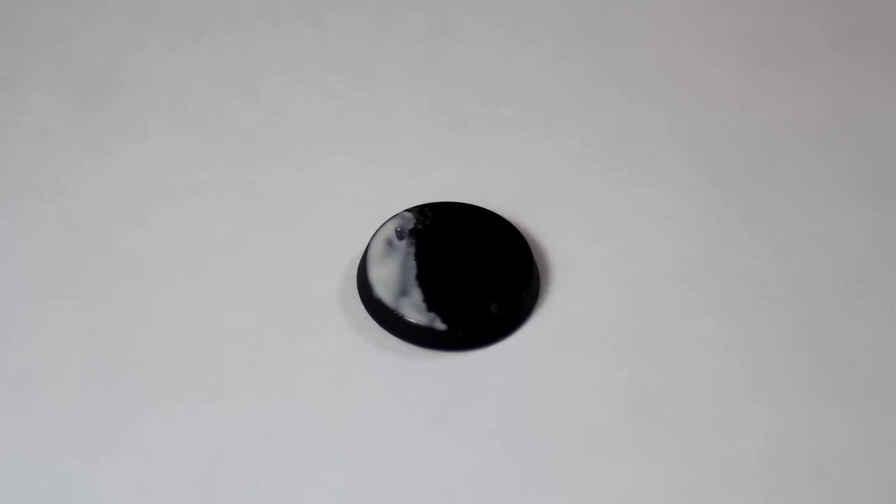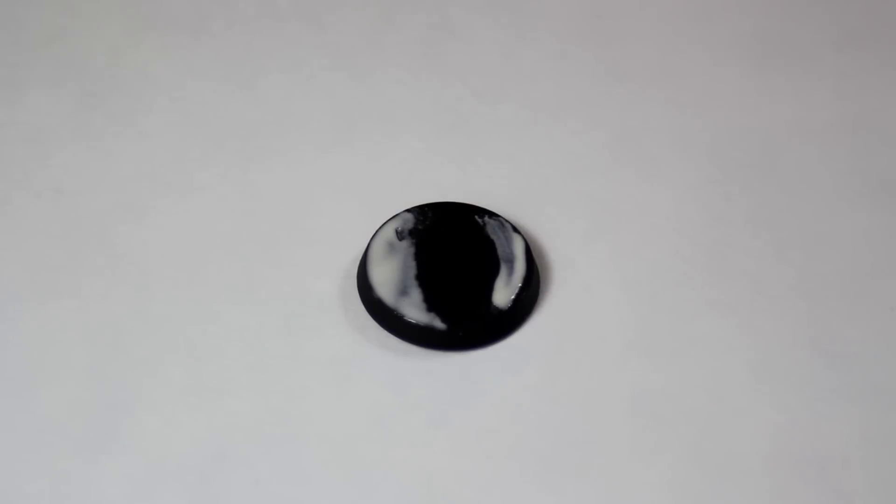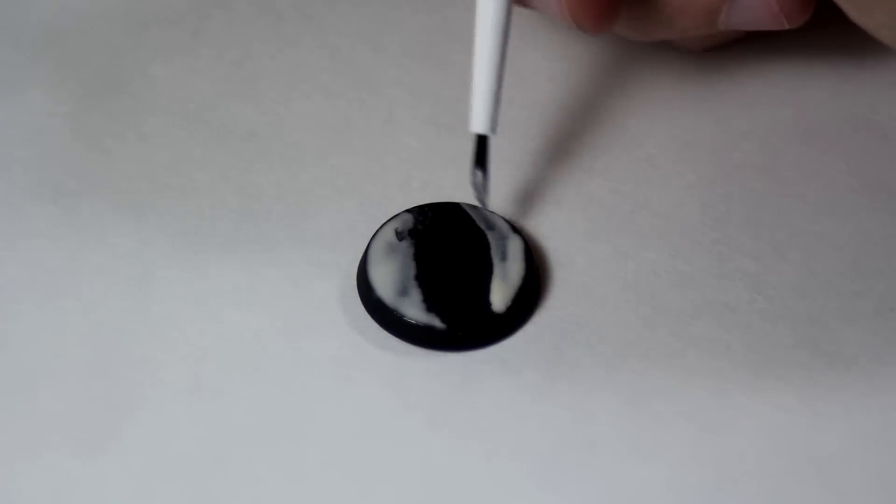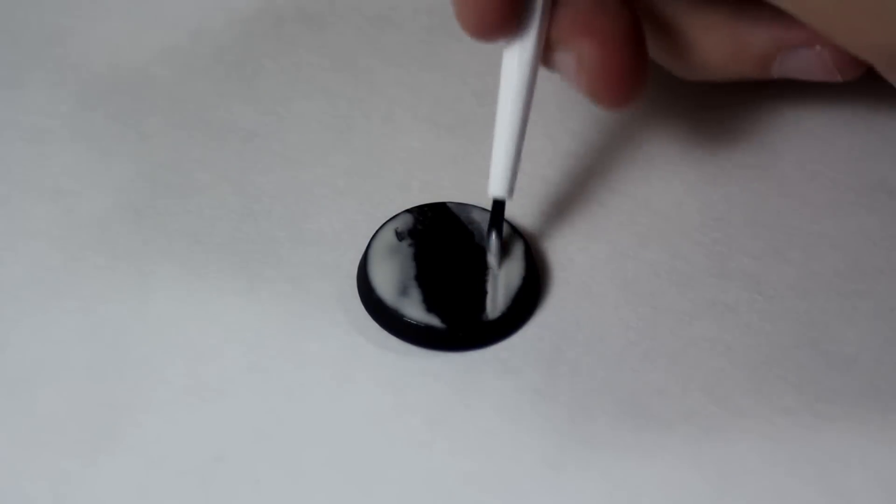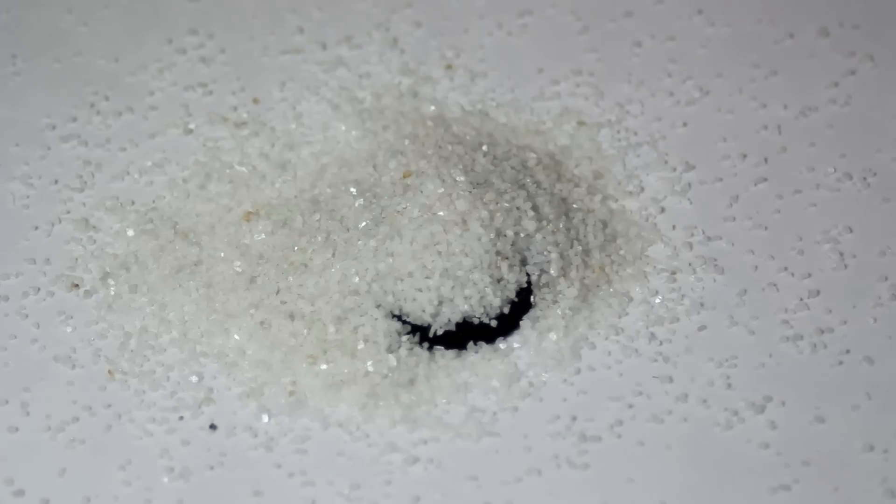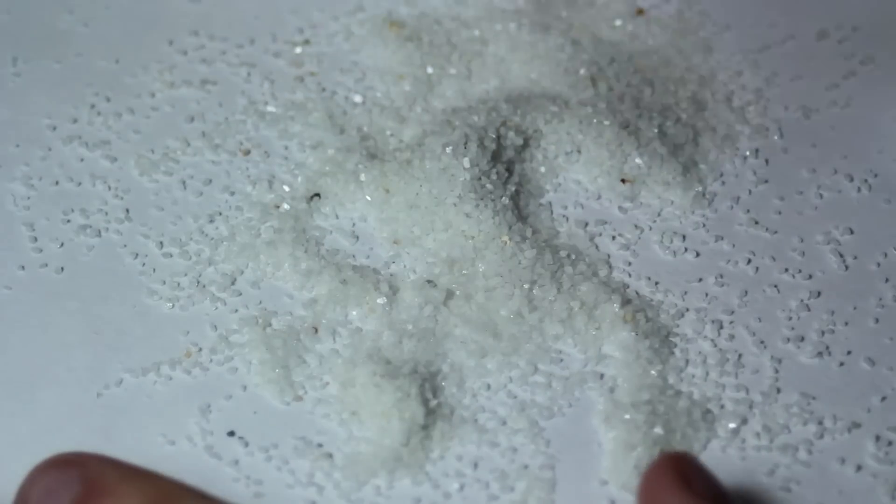So first I applied some white PVA glue to the base. Now I'm trying to create a river in the middle so I'm going to be applying some large grain sand on the sides. So that's what I'm doing right here with the PVA glue. And there's the large grain sand. And then shake it off.